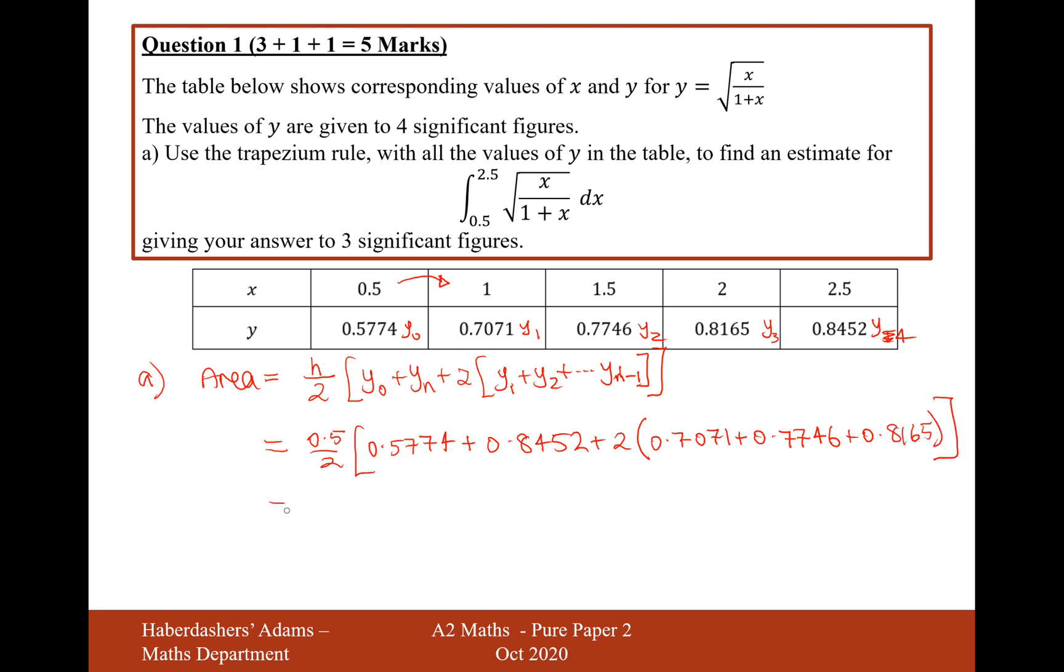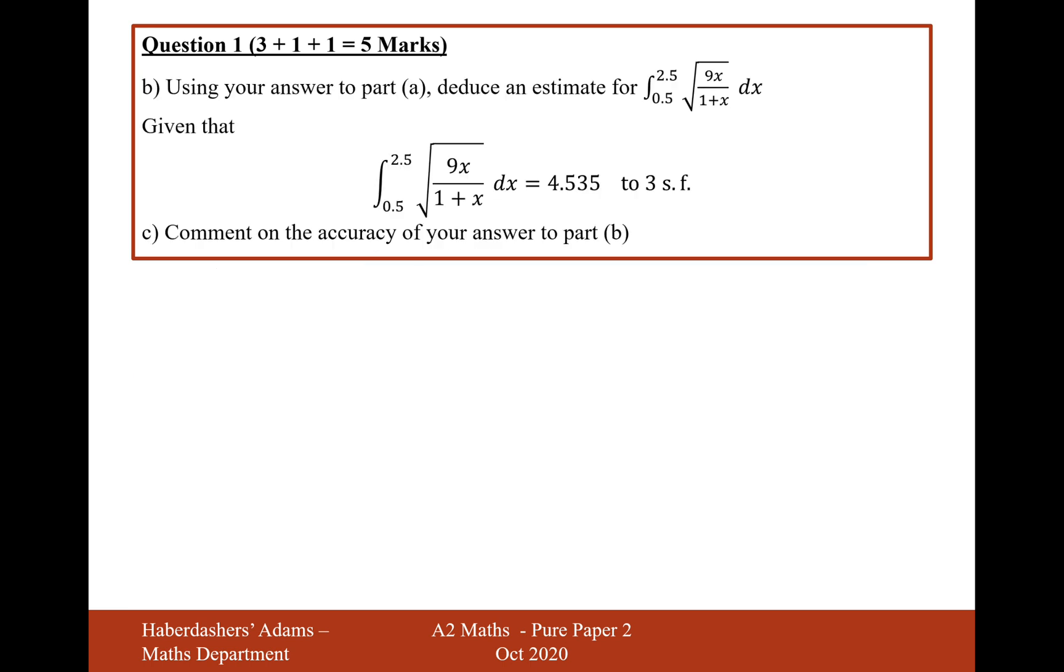Close the second bracket, and when you type that all into your calculator, type it all in in one go, you get 1.50 to three significant figures. So there we are, that's the answer to part a, let's move on to part b.